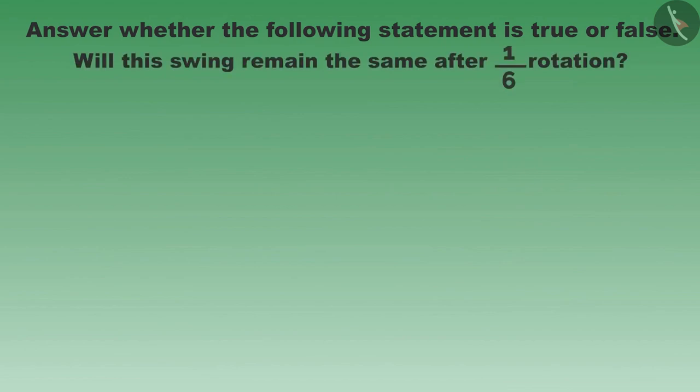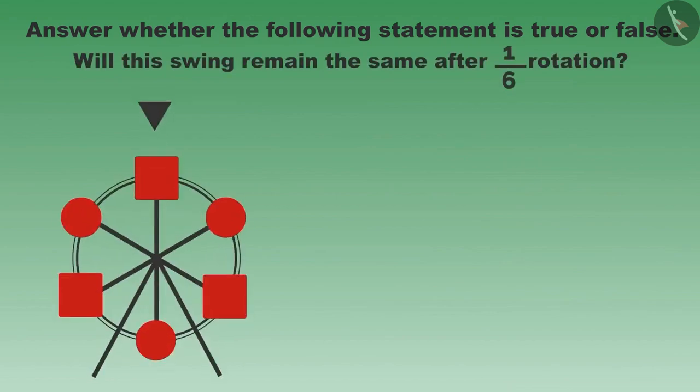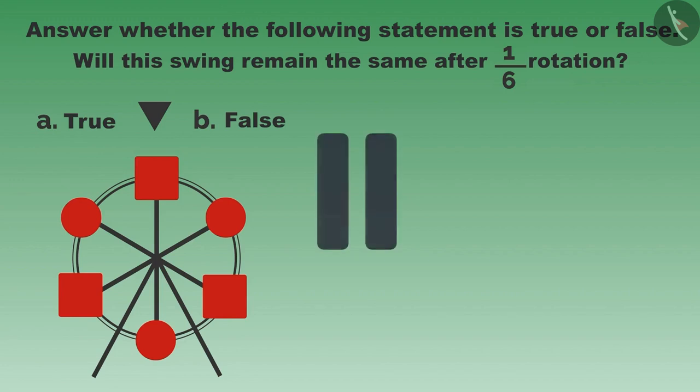Let us look at another example. You must have seen this circular swing — look at it very carefully. Will it remain the same even after one-sixth rotation? Let us rotate it. You can pause the video and think for a while.